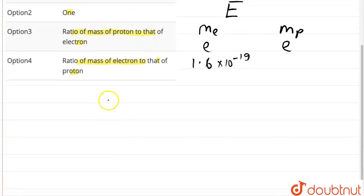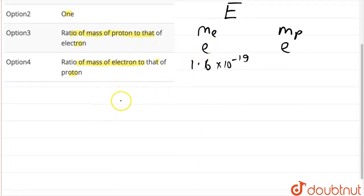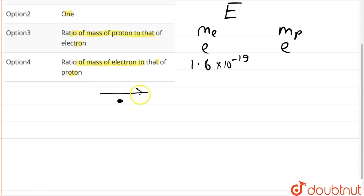Now, as we know, when a charge is placed in an electric field, it will experience a force. This force is given by F equals charge multiplied by the intensity of electric field. So force on electron would be e multiplied by E and force on proton would be e multiplied by E.